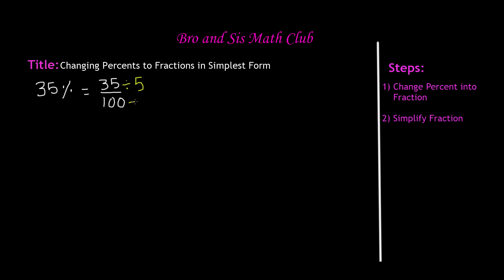So we know that 35 divided by 5 is equal to 7 because 7 times 5 is 35, and 100 divided by 5 is equal to 20 because 20 times 5 is 100. So the simplest form of the percentage 35% in fractions is 7 out of 20.